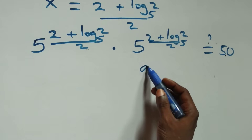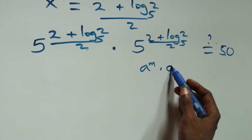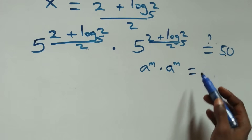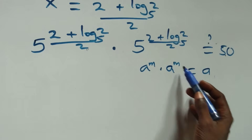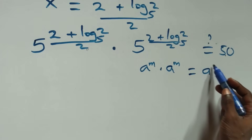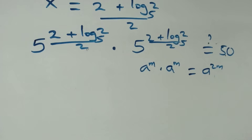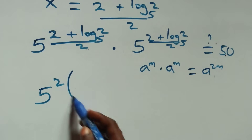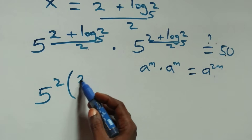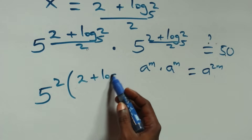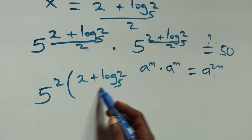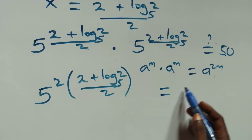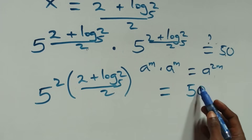Following the rule: a raised to power m, times a raised to power m, is the same as a raised to power m plus m, which is 2m. So we have 5 raised to power 2 times (2 + log₅2)/2. This equals to 50 on this side.